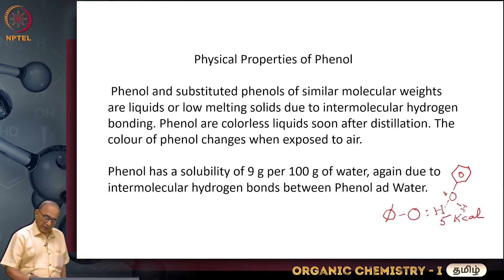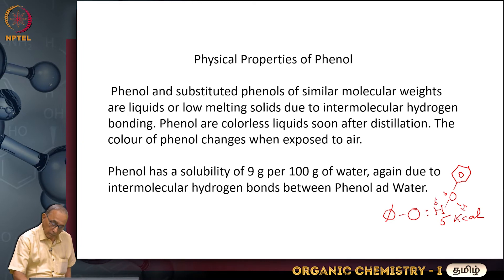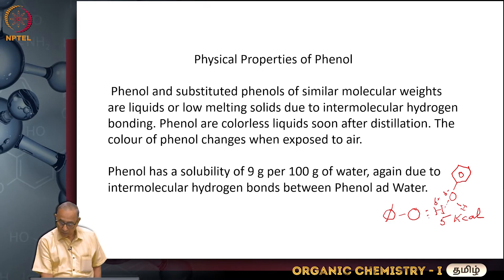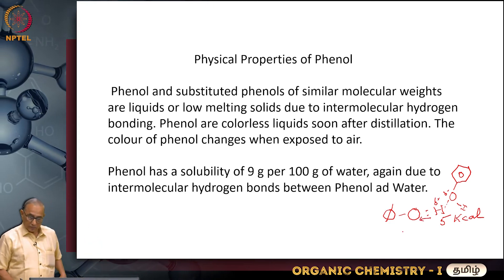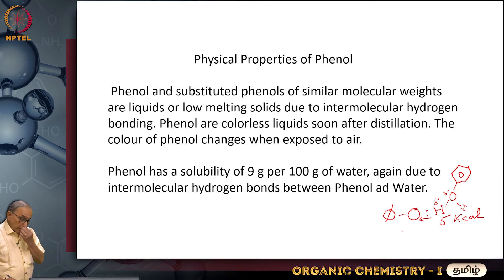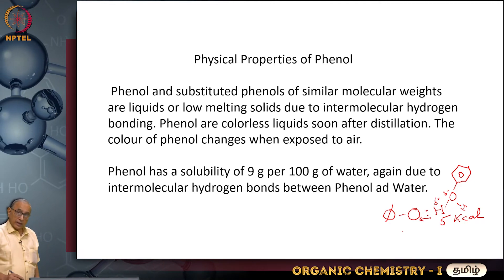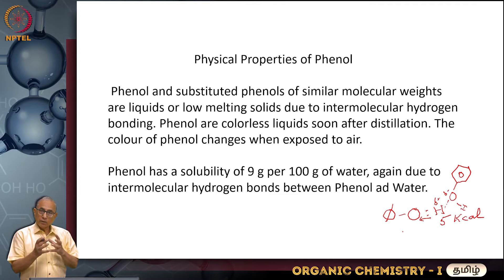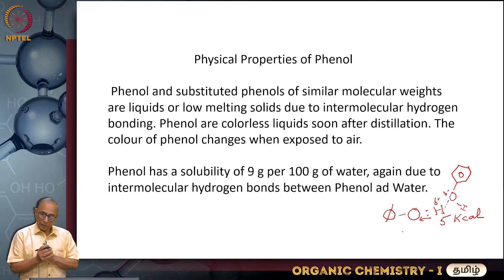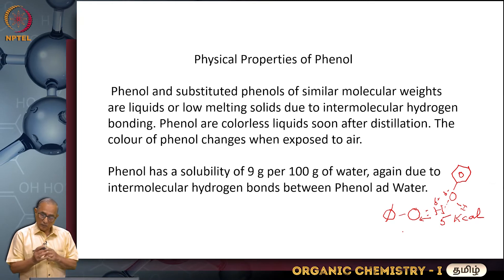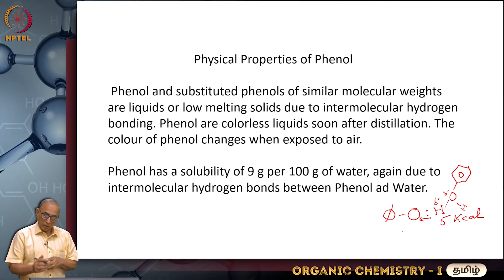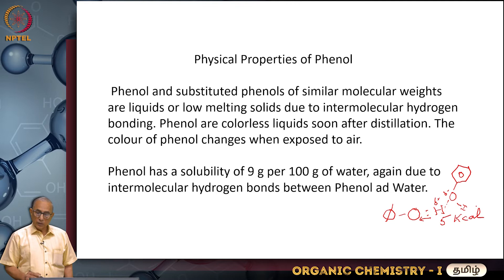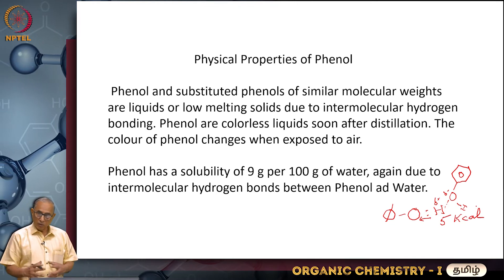This creates a delta-plus on hydrogen and delta-minus on oxygen because the bonding electrons are pushed towards oxygen. This bond has an energy of 5 kilocalories. Because of this bond, the phenolic molecule will associate as a dimer or even a trimer — two or three hydrogen bonds are formed — and this can bond with another molecule of phenol, giving three molecules of phenol forming an aggregate.